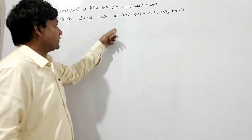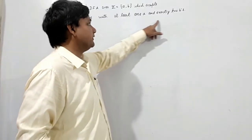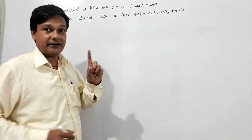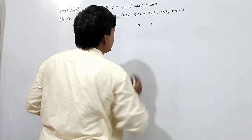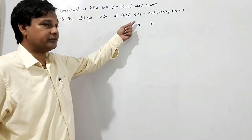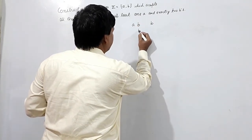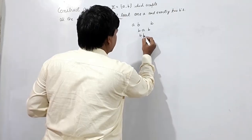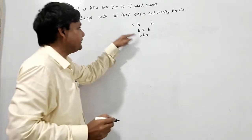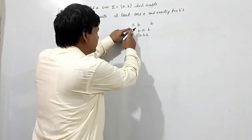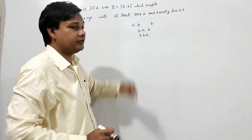Here sigma is {A, B} and strings have to be accepted with at least one A and exactly two B's. There are exactly two B's. So B is here and one B is here. In how many ways can I put this A? A can be kept before the first B, between the two B's, or after the second B — so I can place this A in three ways. This is about at least one A.